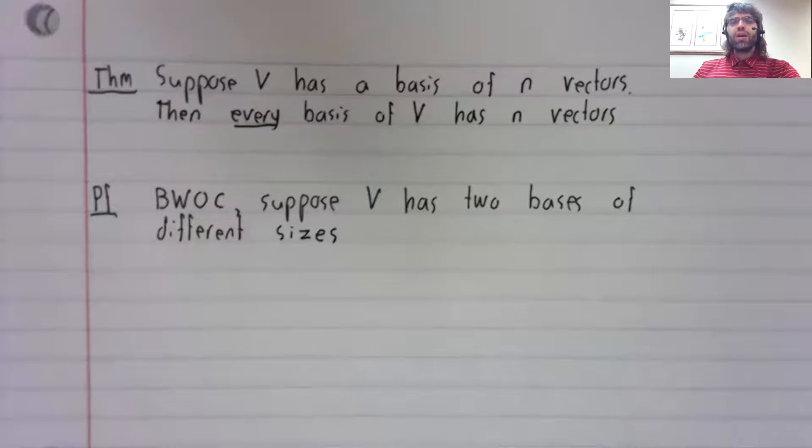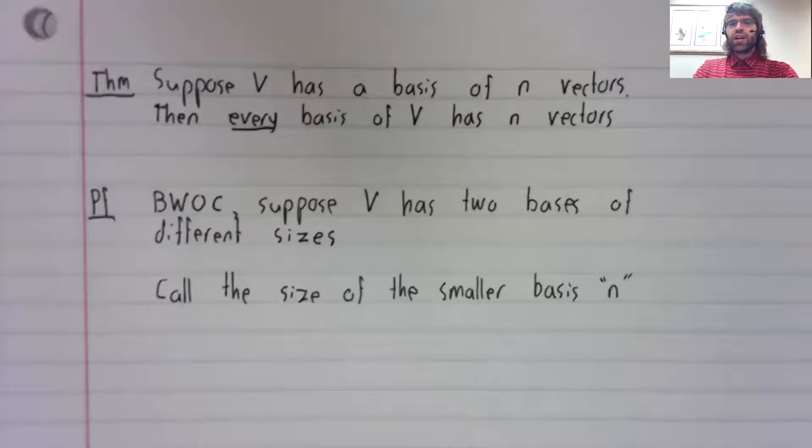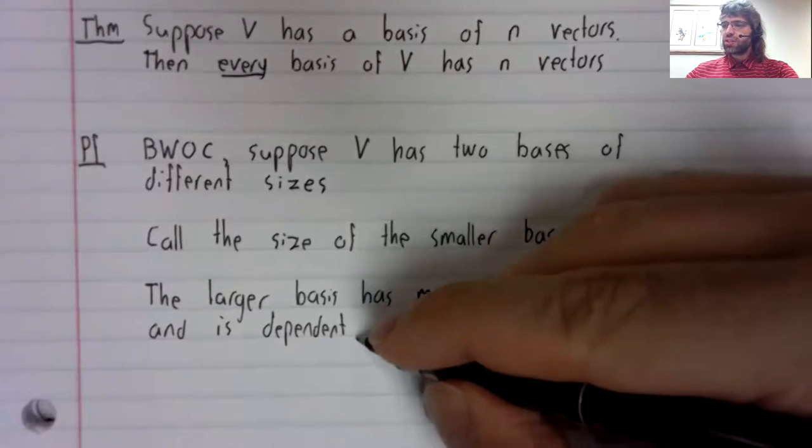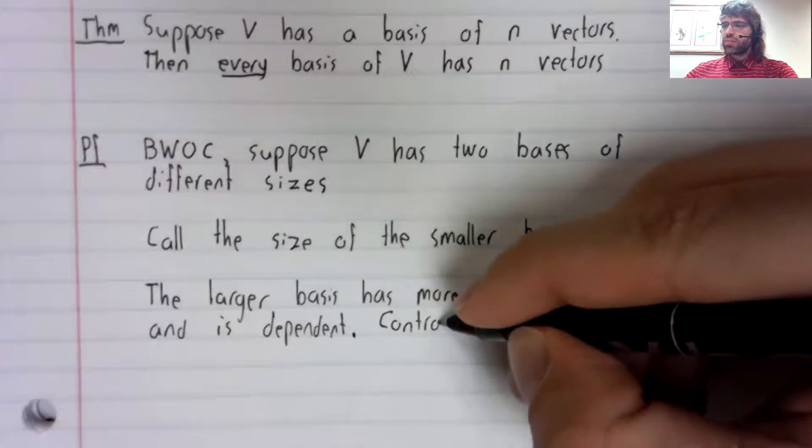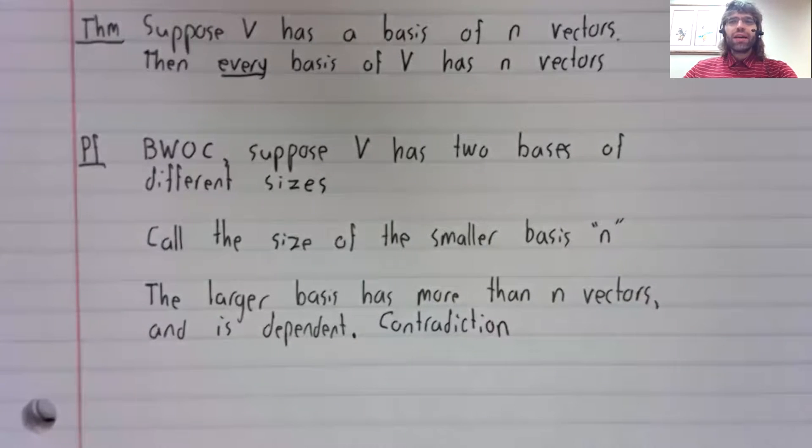Proof. By way of contradiction, suppose V has two bases of different sizes. Call the size of the smaller basis N. Then the larger basis has more than N vectors. The lemma we just looked at says that this set is dependent. And that is a contradiction. We cannot have a linearly dependent basis.